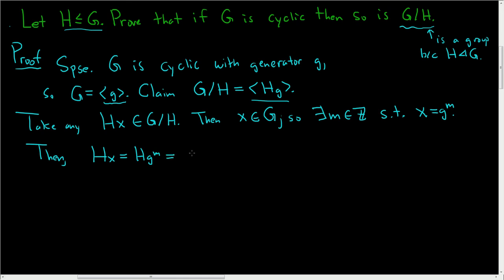By definition of multiplication in the quotient group, this is Hg · Hg · ... · Hg, where we have m copies of this right coset. This is (Hg)^m, which is certainly in the cyclic group generated by Hg.